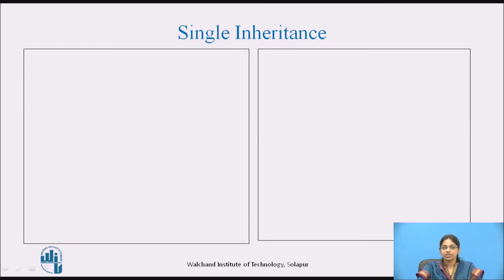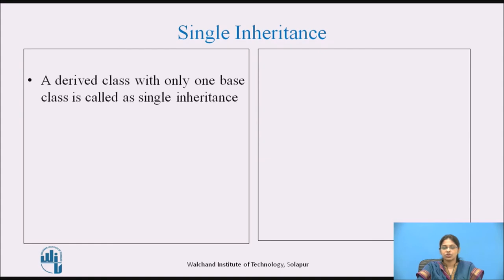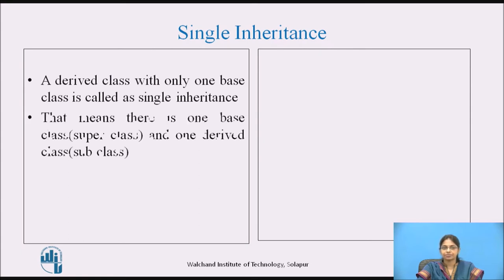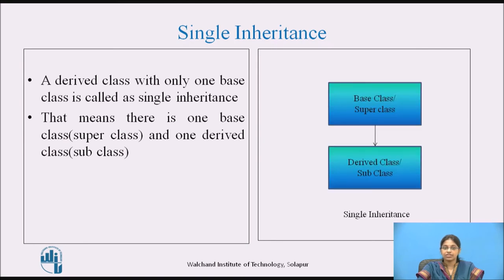In this video, we are going to focus only on single inheritance. A single inheritance is a derived class with only one base class. There is only one base class, which is the super class, and one derived class, which is the subclass. The structure shown contains only one base class from which a single derived class has been derived.